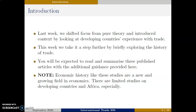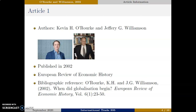You will be expected to read and summarize three published articles with the additional guidance provided here. The first article is written by Kevin H. O'Rourke and Jeffrey G. Williamson, both famous in the economic history world. You can see their photos here as well. Both are now retired, but Professor O'Rourke is still associated with New York University in Abu Dhabi and Professor Williamson was at Harvard University. The article was published in 2002 in the European Review of Economic History, a top economic history journal with an impact factor of 1.114. You can see the article's full bibliographic reference here as well.